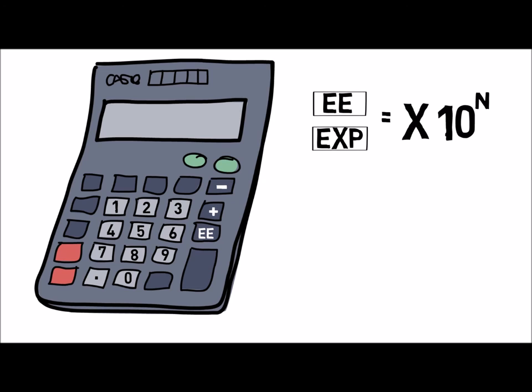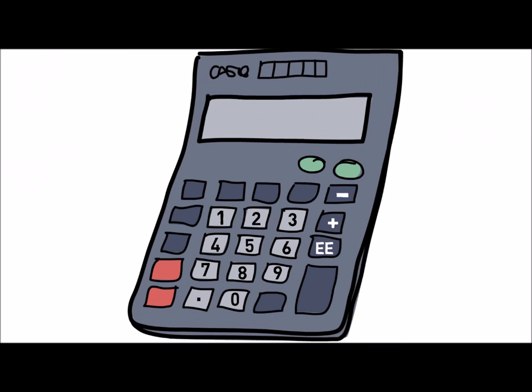For an exponent with a negative value, enter a negative sign before entering the value of the exponent. For example,